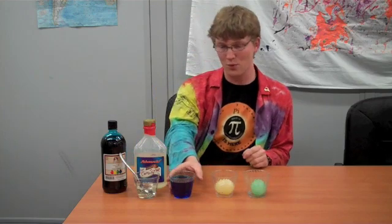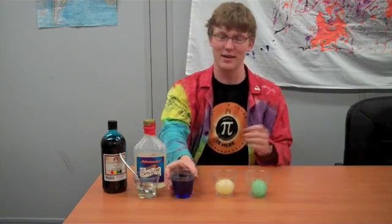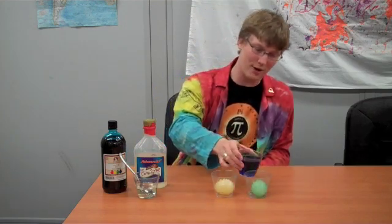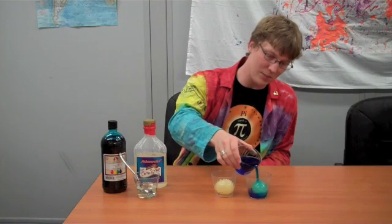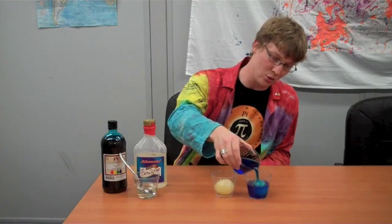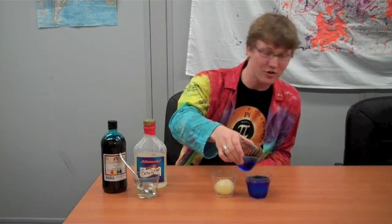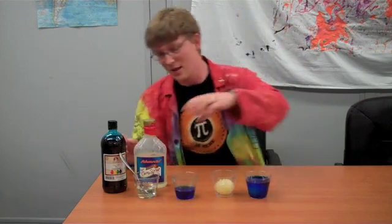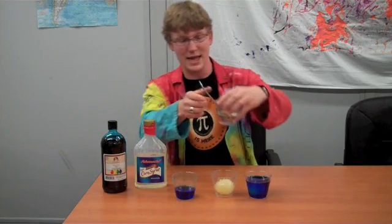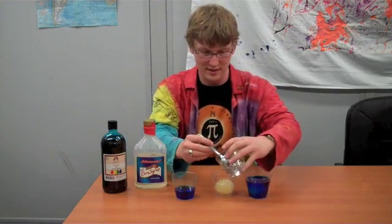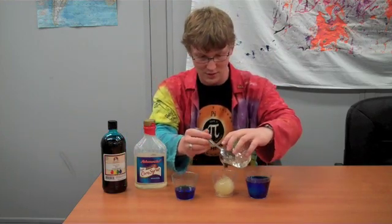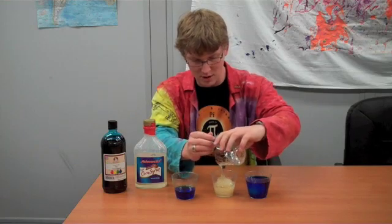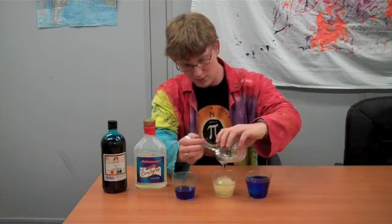Now, for this experiment, we're going to take our shell-less eggs and the first one, cover it so that it is completely submerged in blue water. This also works with normal water, I just like pretty colors. And the second one, we're going to take corn syrup and do the exact same thing so that the egg is completely submerged in corn syrup.